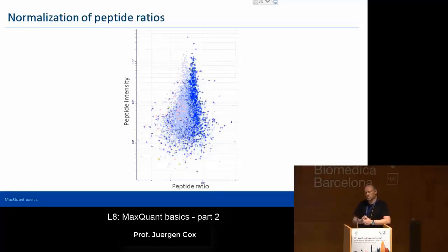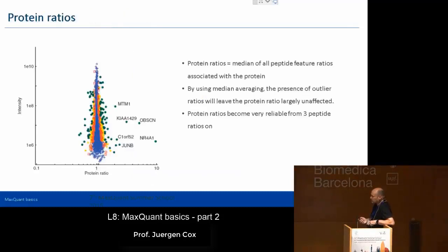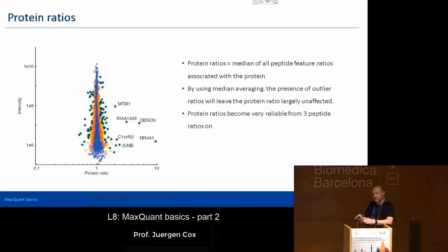Regarding normalization — when you assume samples are similar and apply normalization, how similar do they need to be? That's a common question for all methods that assume on average nothing changes. For LFQ, we have a criterion that might sound a bit crazy: if the algorithm runs through and manages to normalize, it's fine. If samples are too different, the algorithm will actually fail. So now we have normalized peptide ratios for MS1 level labeling. The step from peptides to proteins in quantification is quite different for different labeling types — for LFQ it's a complicated normalization scheme, the MaxLFQ algorithm, covered later.